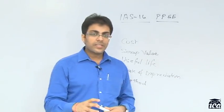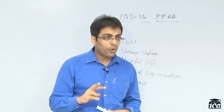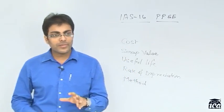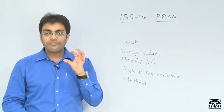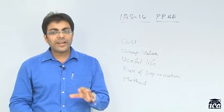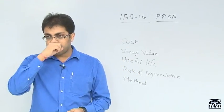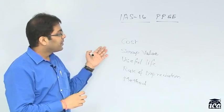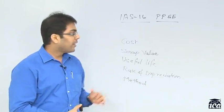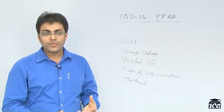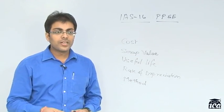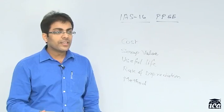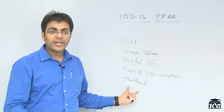Quick recap: We have talked about the revaluation method and the cost method — these are the two models for subsequent measurement of an asset. In case of the revaluation method, the fair value of the asset must be identified every year and we adjust the profit and loss account or the revaluation reserve accordingly. In case of depreciation, any change in rate, useful life, or method is considered a change in estimate and under IFRS is affected prospectively, whereas in the Indian context a change in depreciation method is recorded retrospectively.